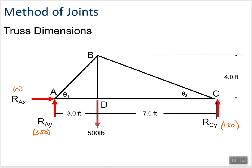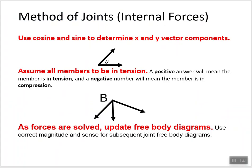So what I've done here is I've added numbers that we'd already calculated a few days ago. We knew that RAY and RCY were 350 and 150 because these two had to add up to the 500 pounds heading in the opposite direction. We also learned that RAX was equal to zero because it was the only thing heading in the X direction.